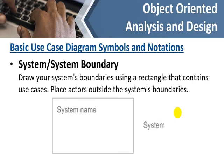We have a few basic symbols and notations to draw a use case diagram. The first one is the system boundary. All the use cases come into this boundary — it describes what is going inside the system, what we are going to perform inside the system. This square or rectangle shape is the system in which we put all the use cases.